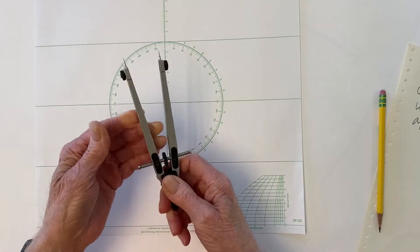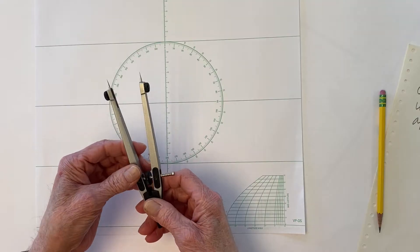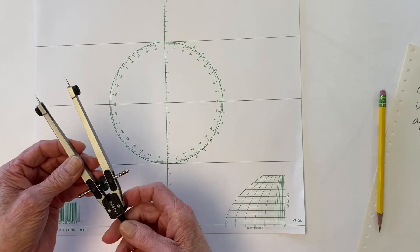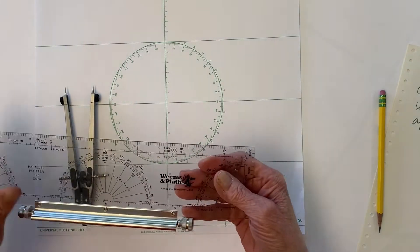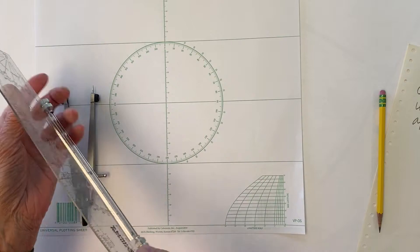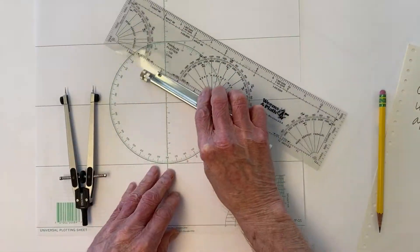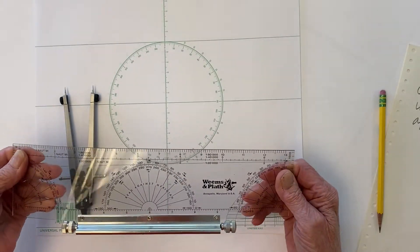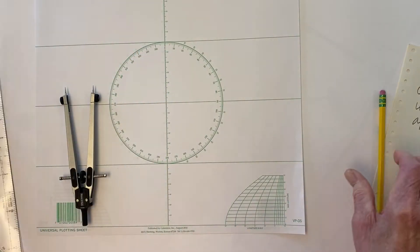And these are probably the dividers of choice among professional mariners around the world for many years now. They come from Denmark, I think, originally. Well, these say Germany, but they also come from Denmark. And then this is an optional tool we're going to use here, the Weems Parallel Plotter. There's other ways to do this. You could use the parallel rulers, but this also works. This one's a little bit bowed, but it won't matter.